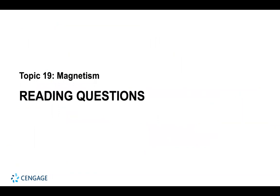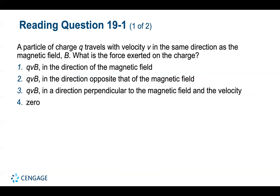Before we get into the details of today's lecture, we'll do a little reading review. These are reading questions — I'll go through them fairly quickly, and you can feel free to pause and review each one. Number one: a particle of charge Q travels with velocity V in the same direction as the magnetic field B. What is the force exerted on the charge? The answer is zero.